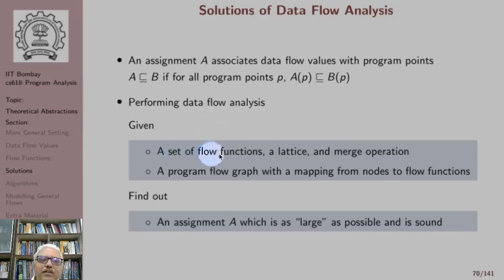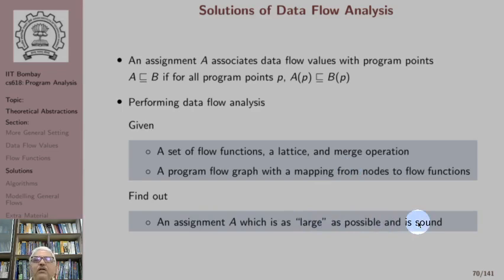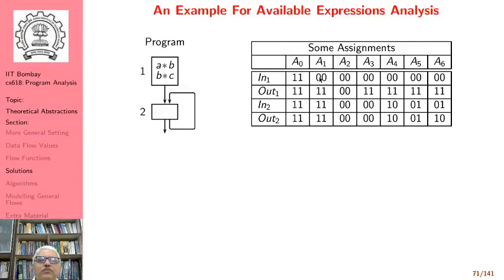We are given a set of flow functions, a lattice, a merge operation, and a control flow graph with a mapping from nodes to flow functions, so we know the flow function corresponding to each node. Then we want to find an assignment which is as large as possible and also sound, where 'large' is defined in terms of the weaker-than relationship we have already seen.